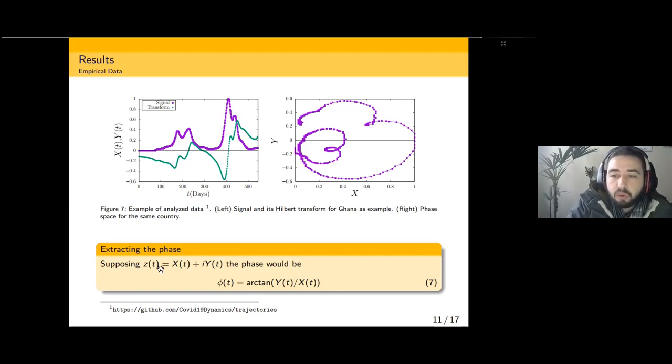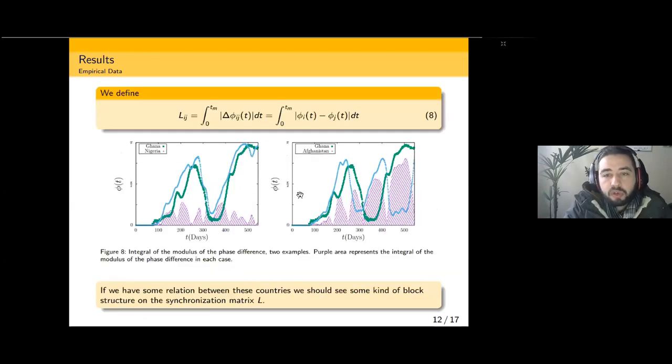This is important because now we can treat each country as dots in this phase space, each of which running on its own closed trajectory. These trajectories are not necessarily the same, but the countries are running on these trajectories and we'd like to know if these runners are somehow synchronized.